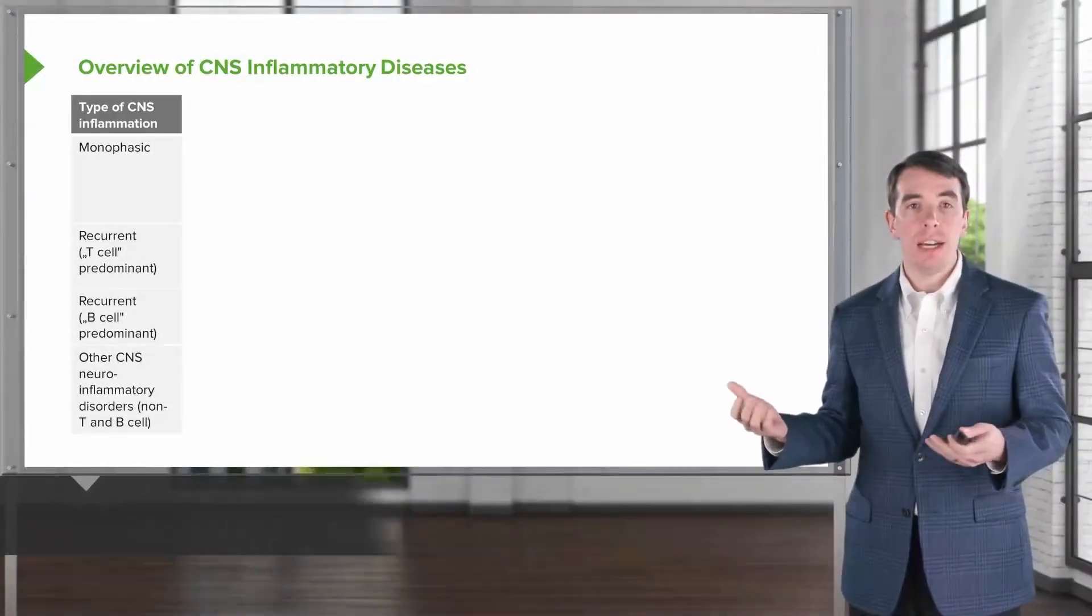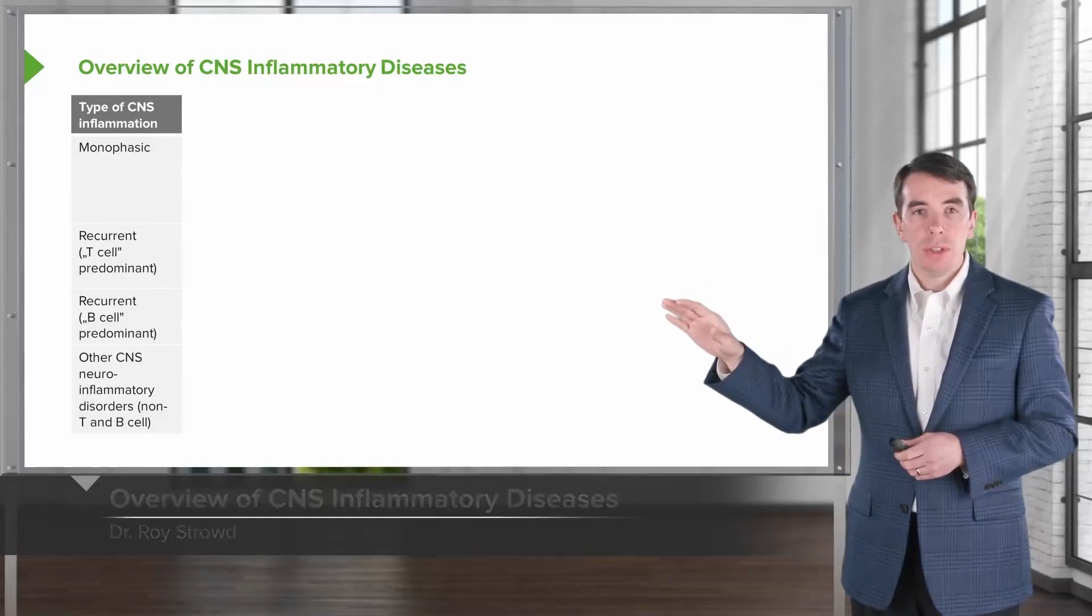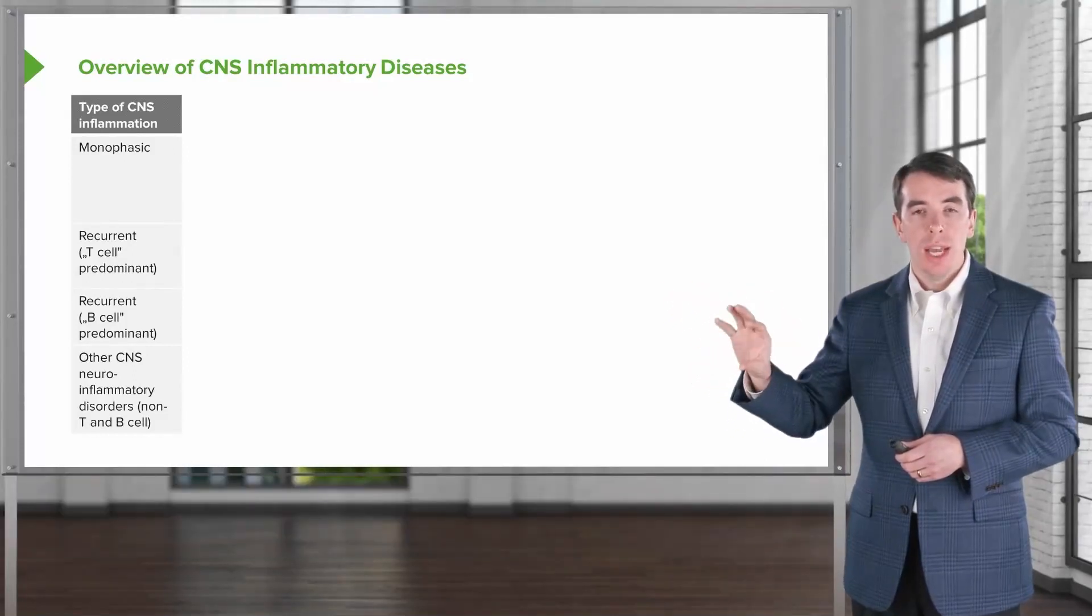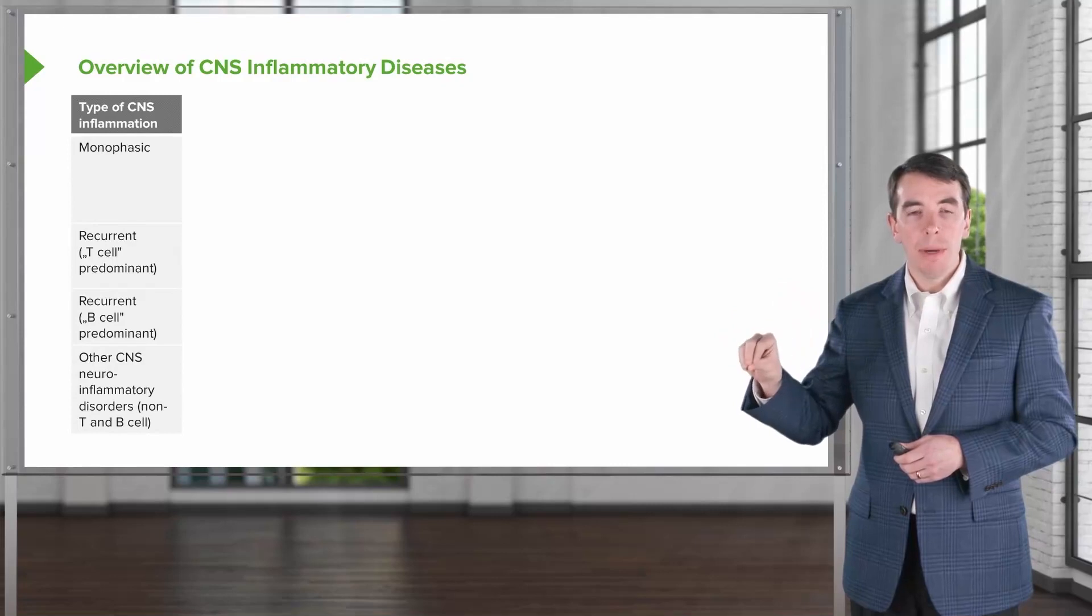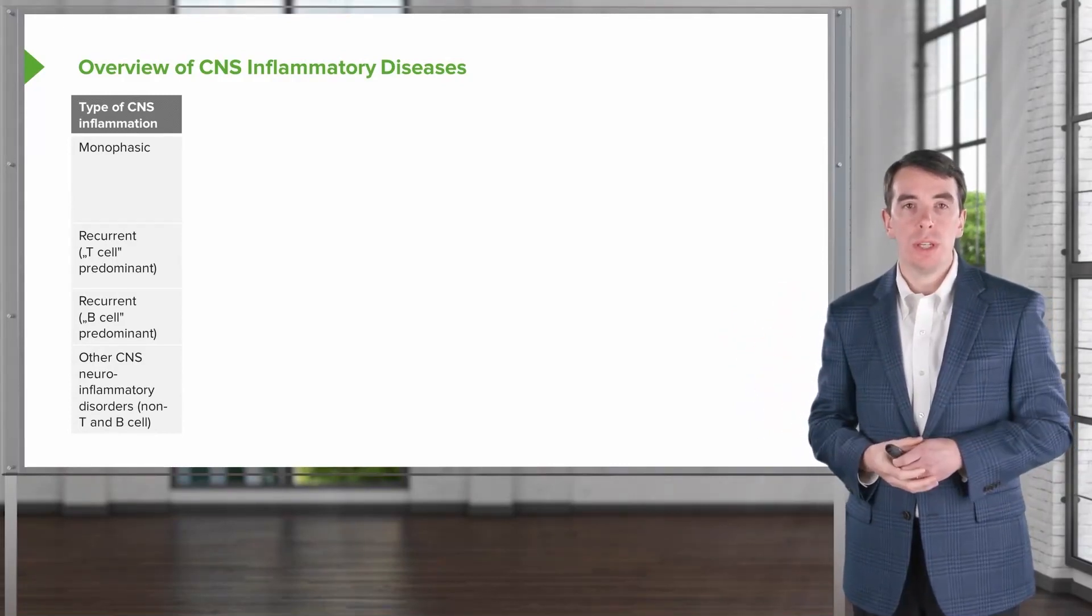So let's walk through some of the types of CNS inflammatory conditions we can see: the monophasic illnesses, the recurrent illnesses, and let's think a little bit more about the predominant cell type that's involved and the typical conditions that we see.